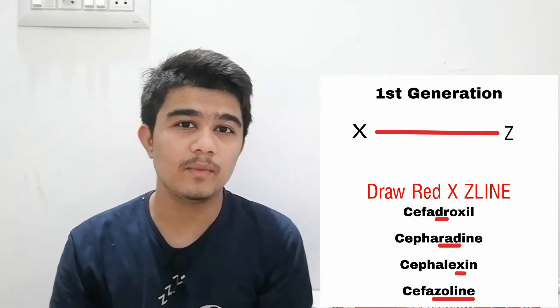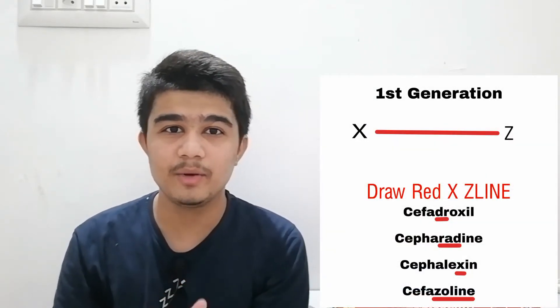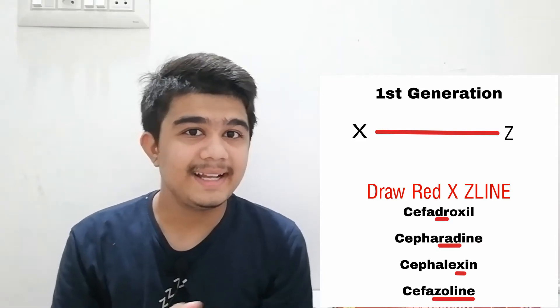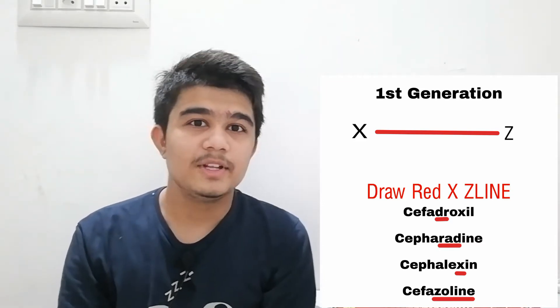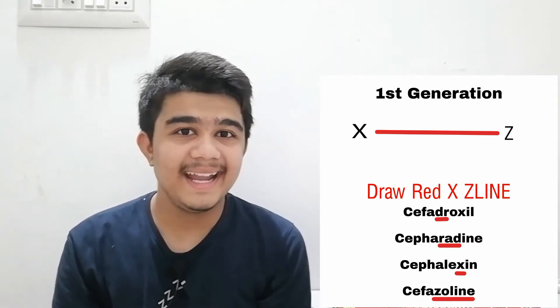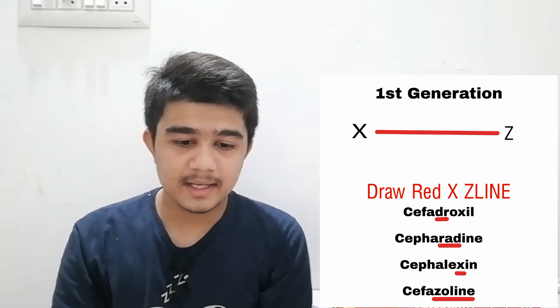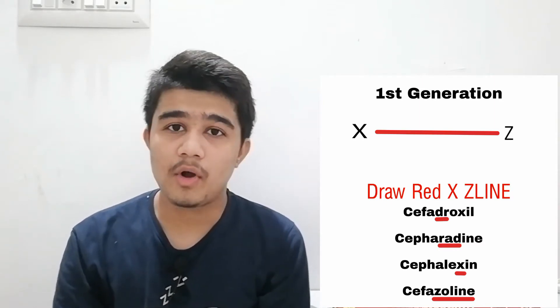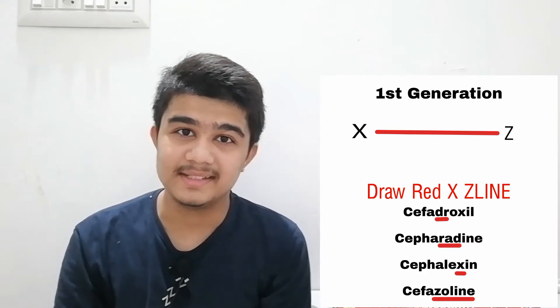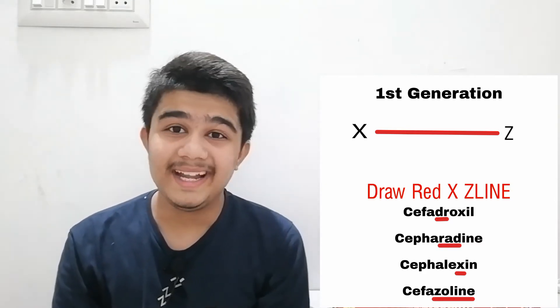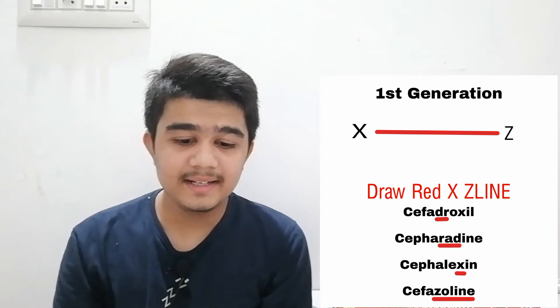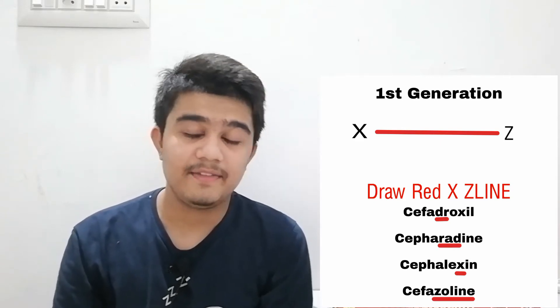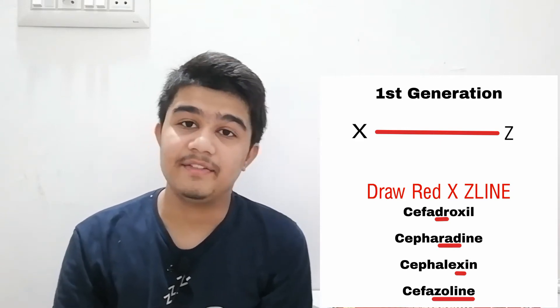Let's start with the first generation. You can see a red line on screen — I'm calling it the X Z line. So the mnemonic is: draw red X Z line. 'Draw' means Cefadroxil, 'red' means Cephradine, 'X' means Cephalexin, and 'Z line' means Cefazolin.